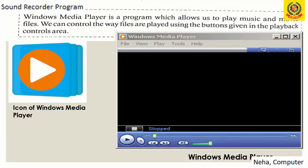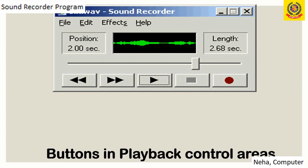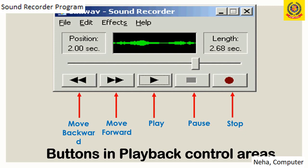On the right hand side we have the Windows Media Player window, which helps with music files or movie files. There is a playback control area with buttons to control the song or video — like the play button, which starts any music file; the pause button, which pauses any file or stops it for a while; the stop button, if we don't want to listen; and the backward or forward move buttons.